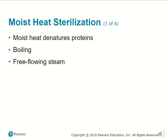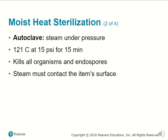Moist heat sterilization involves moist heat denaturing proteins — denaturing meaning the unfolding and making a protein no longer functional. This can involve boiling in water or free-flowing steam. Autoclaves use steam under very high pressure and temperature to kill numerous microbes and bacteria, and to sterilize equipment such as beakers for biological research. It is effective at killing organisms and endospores on surfaces, but the steam must contact the item surface to be effective.